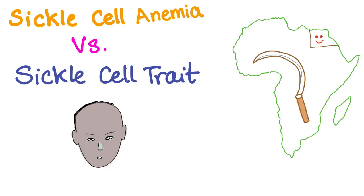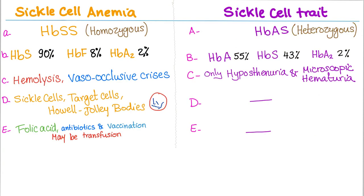We have talked a lot about sickle cell disease, but now let's have a comparison between sickle cell anemia and sickle cell trait. It will be very straightforward. Sickle cell anemia is hemoglobin SS in the genotype, which is homozygous, while sickle cell trait is hemoglobin AS, which is heterozygous. This is the carrier state because sickle cell disease is inherited in an autosomal recessive fashion.